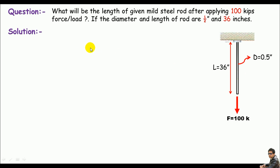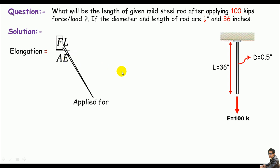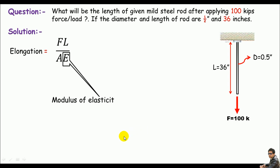In the solution, I'll calculate the elongation of the given rod. The elongation formula is δ = FL / AE. Here F represents the applied force or load, L is the length of the given rod, A is the cross-sectional area, and E is the modulus of elasticity of the material.